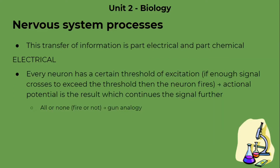The nervous system of our body uses two different types of communication: electrical and chemical. The electrical communication basically involves excitation by nerve cells. Every neuron has a certain threshold of excitation, which is a level where the cumulative excitation reaches to then engage a signal. If there's enough signal to cross the threshold, then the neuron will fire. This action potential is a result which continues a signal further throughout the neuron.